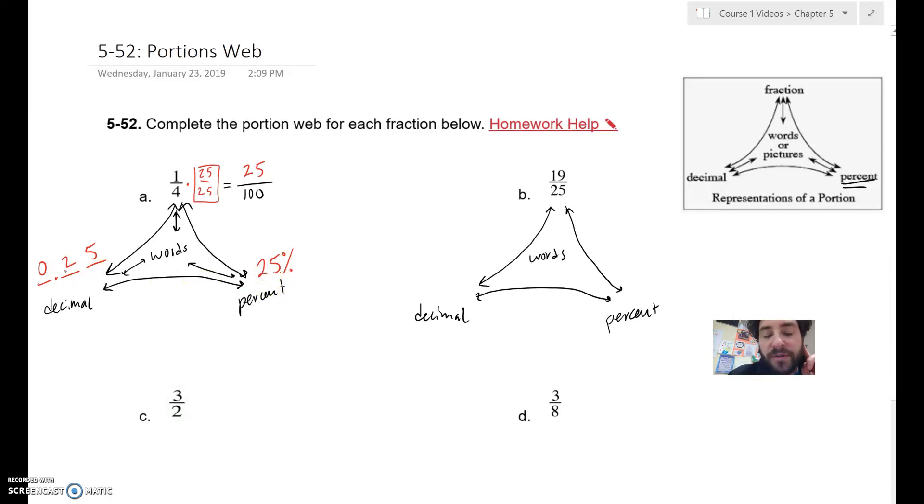So in words, you would write 25 hundredths or 1 fourth. If I can't easily figure out, well, 25 times what is 100, which I think we can here. It would be times 4. If we can't easily think that, what you're going to want to do is you're going to want to turn it into a decimal through division.